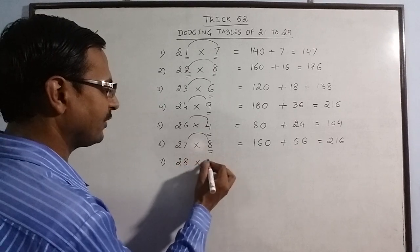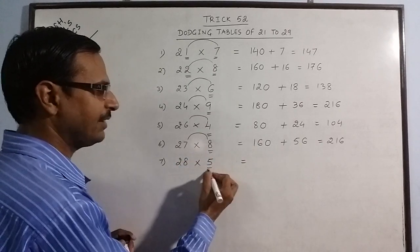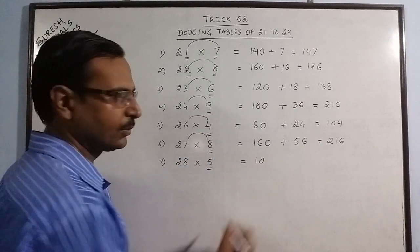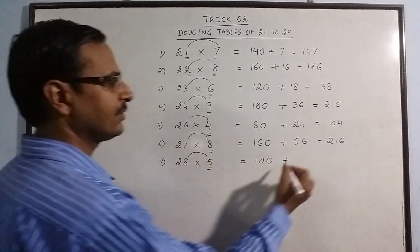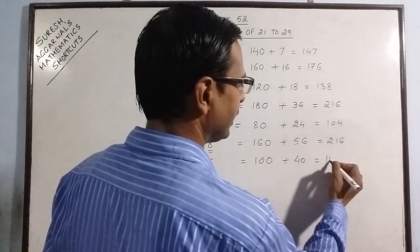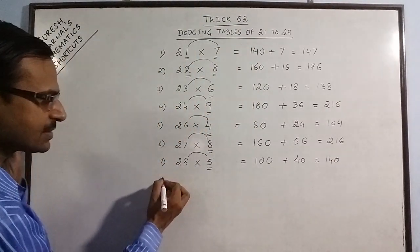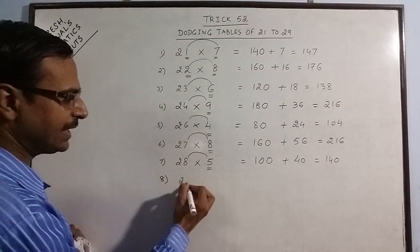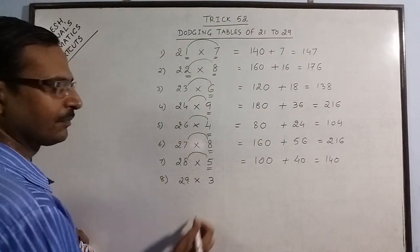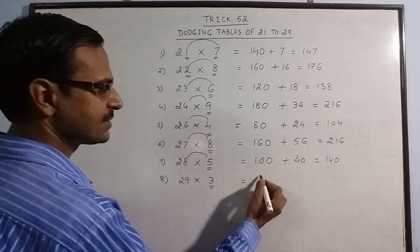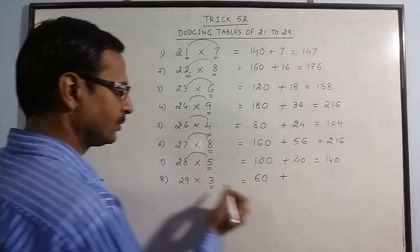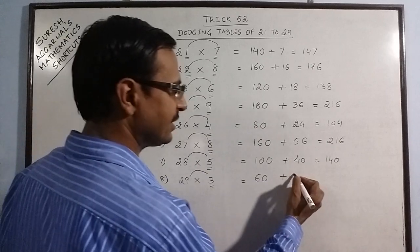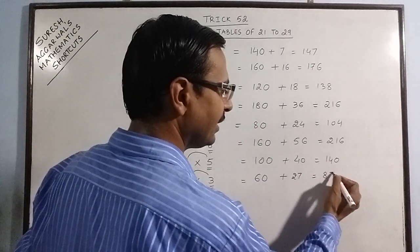More examples: 28 into 5. 5 twos are 10, put a 0, 5 eights are 40, giving 140. We have 29 into 3. Double of 3 is 6, put a 0, 9 threes are 27, add: 87.